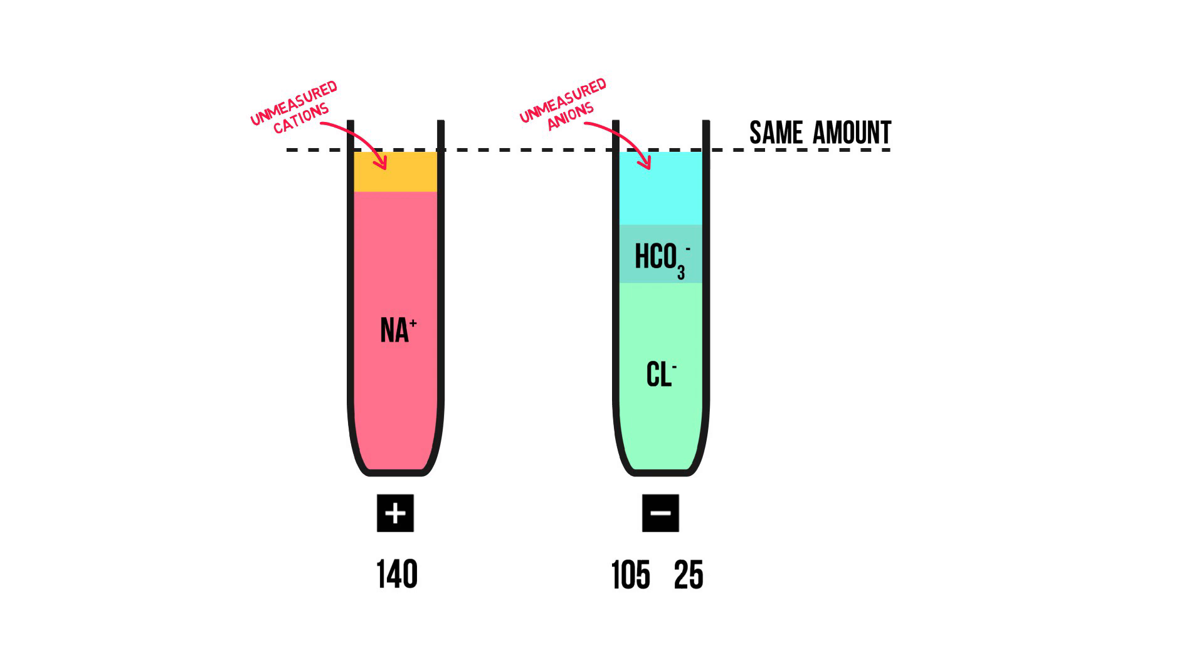Now, let's subtract these anions from the cations. 140 minus 105 plus 25 equals 10. Remember that we consciously left out some unmeasured cations and anions. This number that we just created is called the anion gap. If we were to measure all cations and anions in our body, this gap would obviously be zero. But since we chose not to do this for simplicity, this anion gap of 10 corresponds with electrochemical neutrality, and is therefore considered normal.